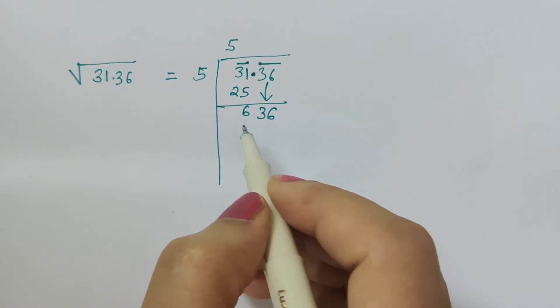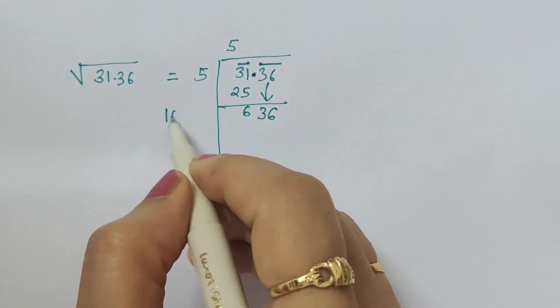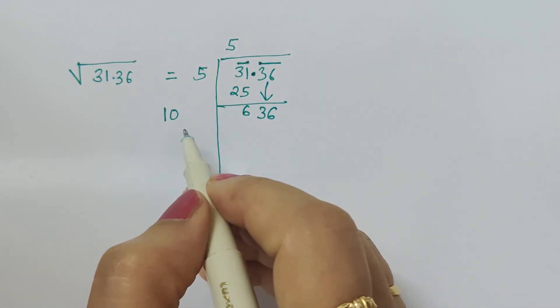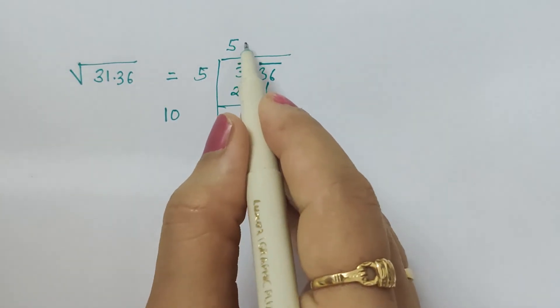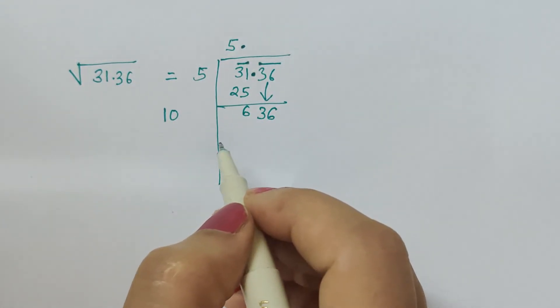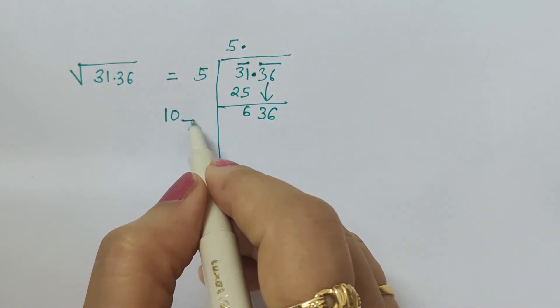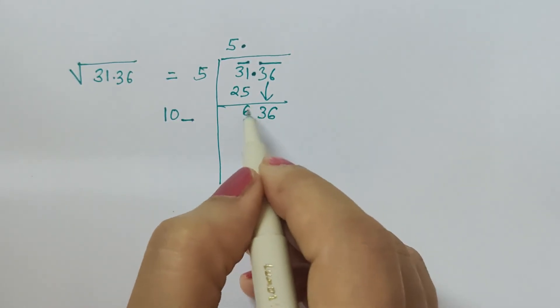After that, 5 gets doubled, so it is 10. Since we have crossed the decimal, we will put a decimal point here.